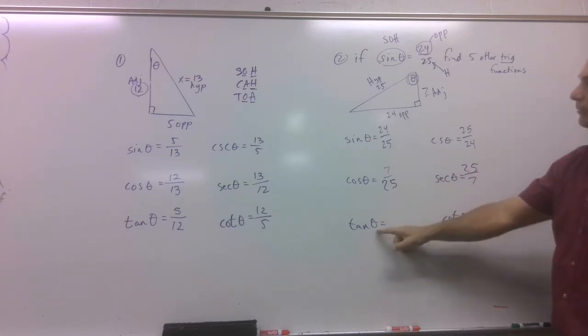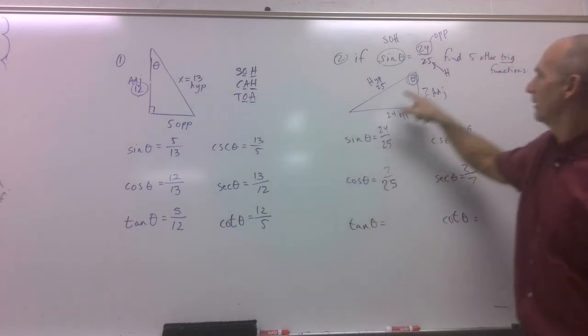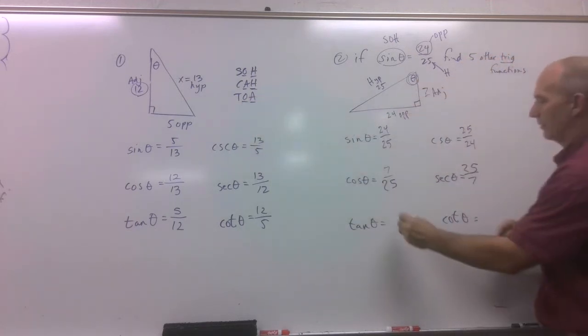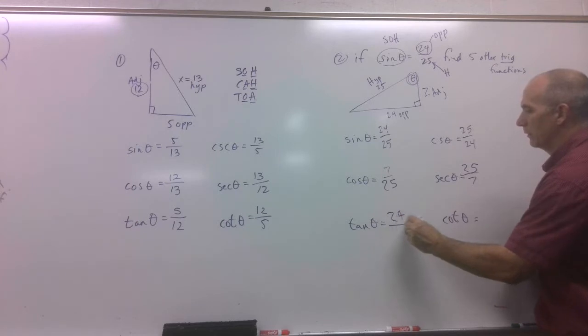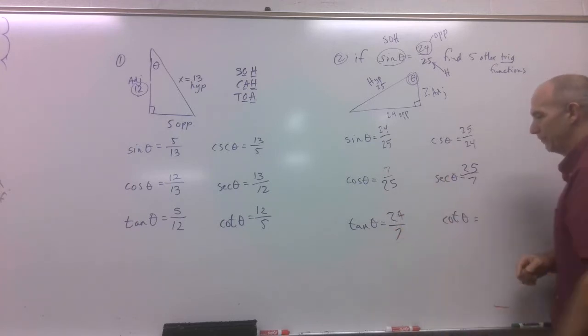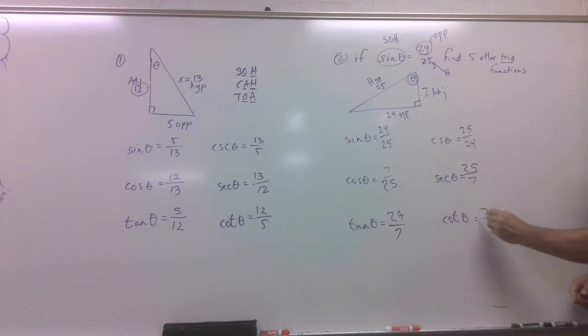Tangent. Tangent, by definition, is opposite over adjacent. That's my reference angle. So opposite is 24, adjacent is 7. Cotangent. That's just a flip of that. So 7 over 24. There they are.